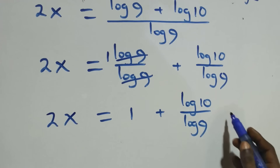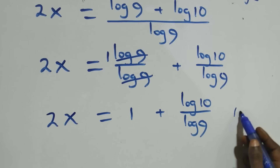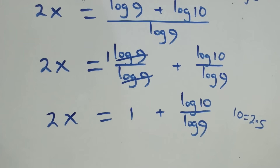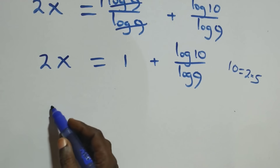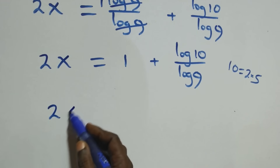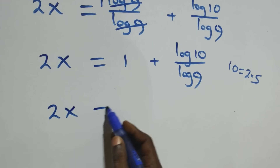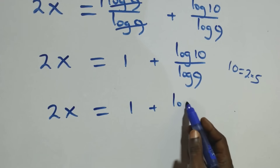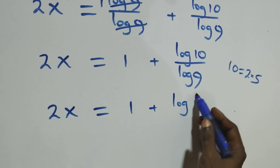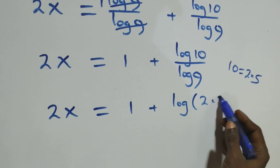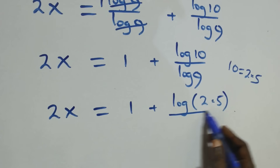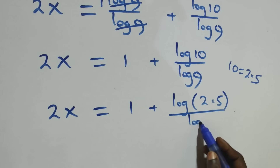We can also express 10 as 2 times 5. Then what we have becomes 2x equals 1 plus log(2·5) over log 9, which we will expand further.